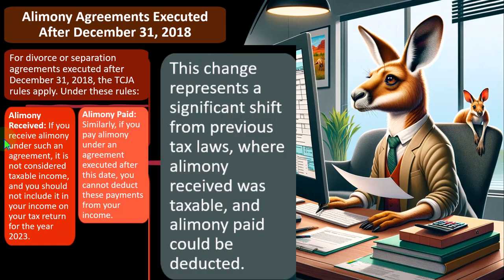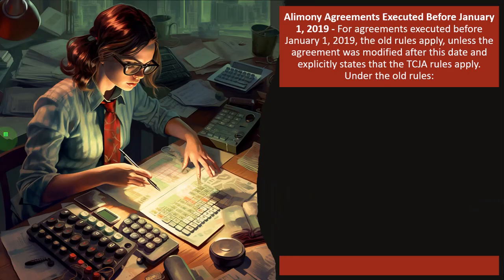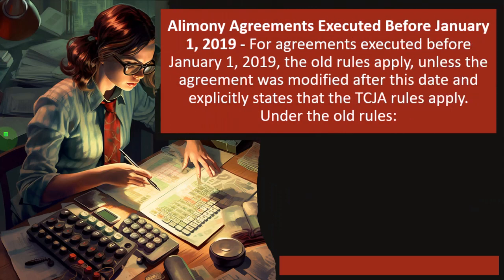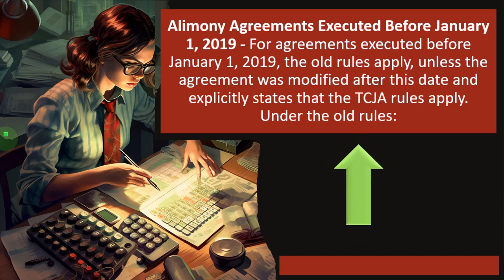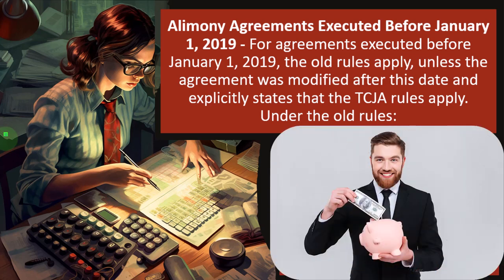This change represents a significant shift from previous tax law where alimony received was taxable and alimony paid could be deducted. For alimony agreements executed before January 1st, 2019, you might be saying — especially if you're the one paying alimony — that you had to execute the agreement and you get the deduction. You're having to pay all this money, but the reason you were okay with it is because at least you got a tax deduction for it. And if the agreement was made before the law change, that makes sense, because that's what was agreed on.